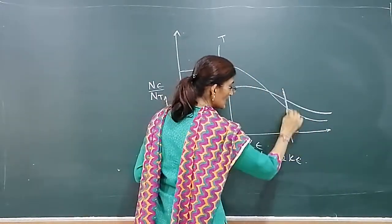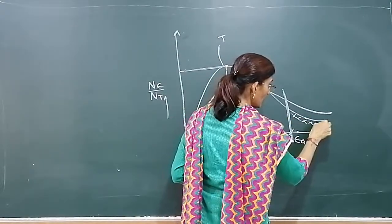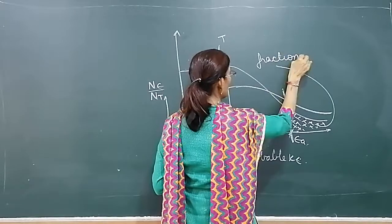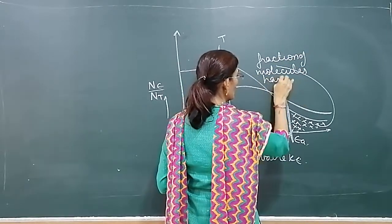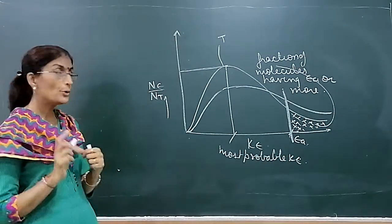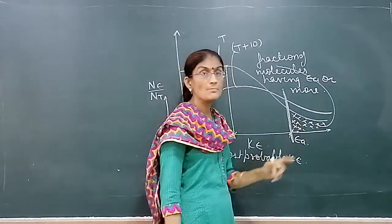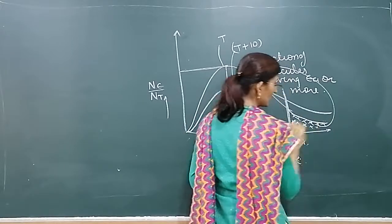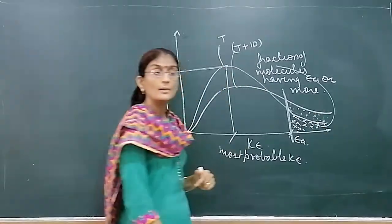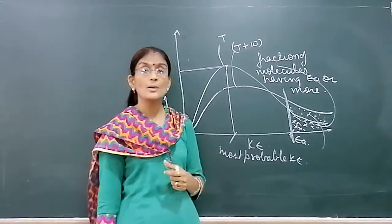If you look at this graph, suppose this energy is the activation energy. These many molecules have activation energy at temperature T1. This is the fraction of molecules having Ea or more than that at temperature T.